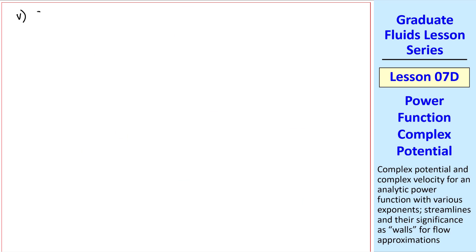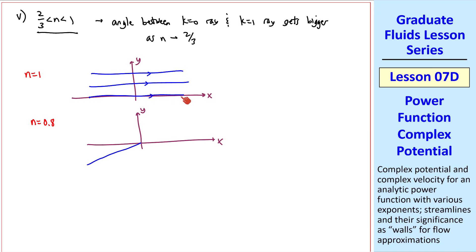We can have other values of n. For example, if n is between 2/3 and 1, the angle between the k equals 0 ray and the k equal 1 ray gets bigger as n approaches 2/3. We already talked about the n equal 1 case, which was the uniform stream. If n equals something like 0.8, the angle between the k equals 0 and the k equal 1 line, which is pi for the n equal 1 case, becomes pi over 0.8 for the n equal 0.8 case. The flow would go something like this. And just as we can think of this as a wall, we can think of this as a wall. So here we have flow over a pi over 0.8 corner. Of course, the general case is theta equal pi over n.